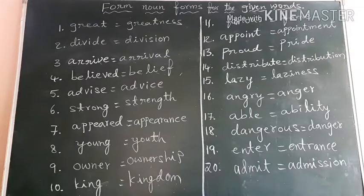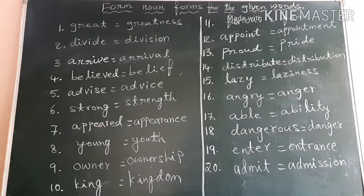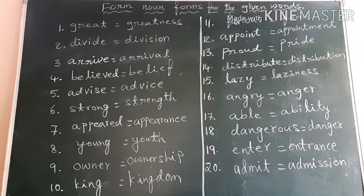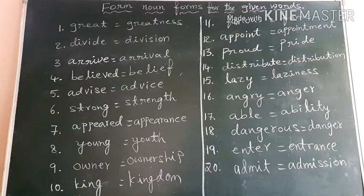There is a worksheet: form noun forms for the given words. Great → greatness. Divide → division. Arrive → arrival. Believe → belief. Advise → advice (A-D-V-I-S-E is a verb; A-D-V-I-C-E is a noun). Strong → strength. Appear → appearance. Young → youth. Owner → ownership. King → kingdom. Famous → fame. Appoint → appointment. Proud → pride. Distribute → distribution. Lazy → laziness. Angry → anger. Able → ability. Dangerous → danger. Enter → entrance. Admit → admission.